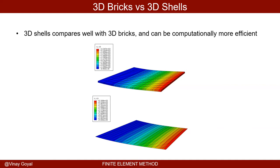If I were to use one solid element through the thickness, that is going to cause the solution not to converge as well. So I have to increase the number of elements through the thickness, and using plate elements will be much more advantageous.